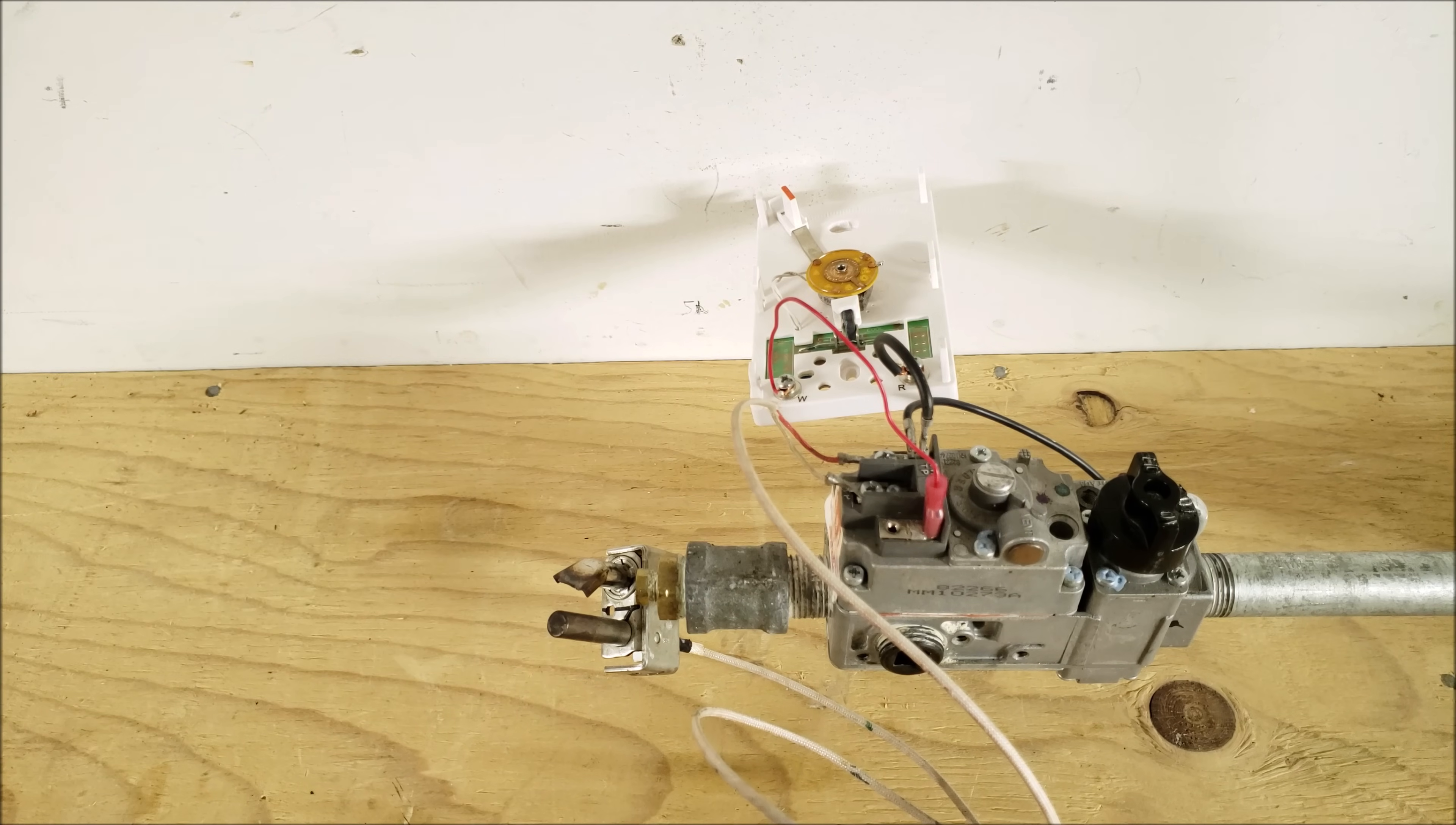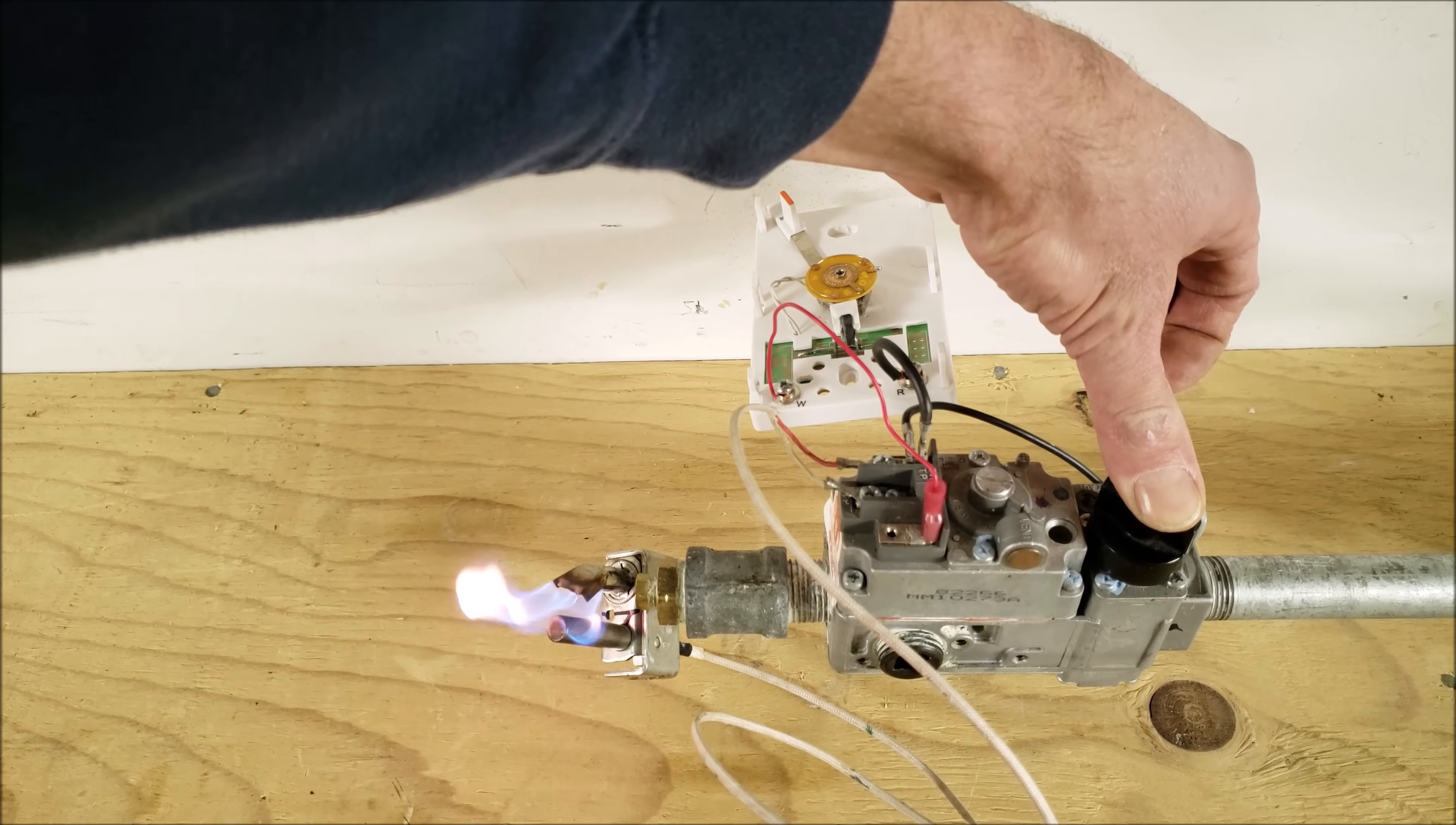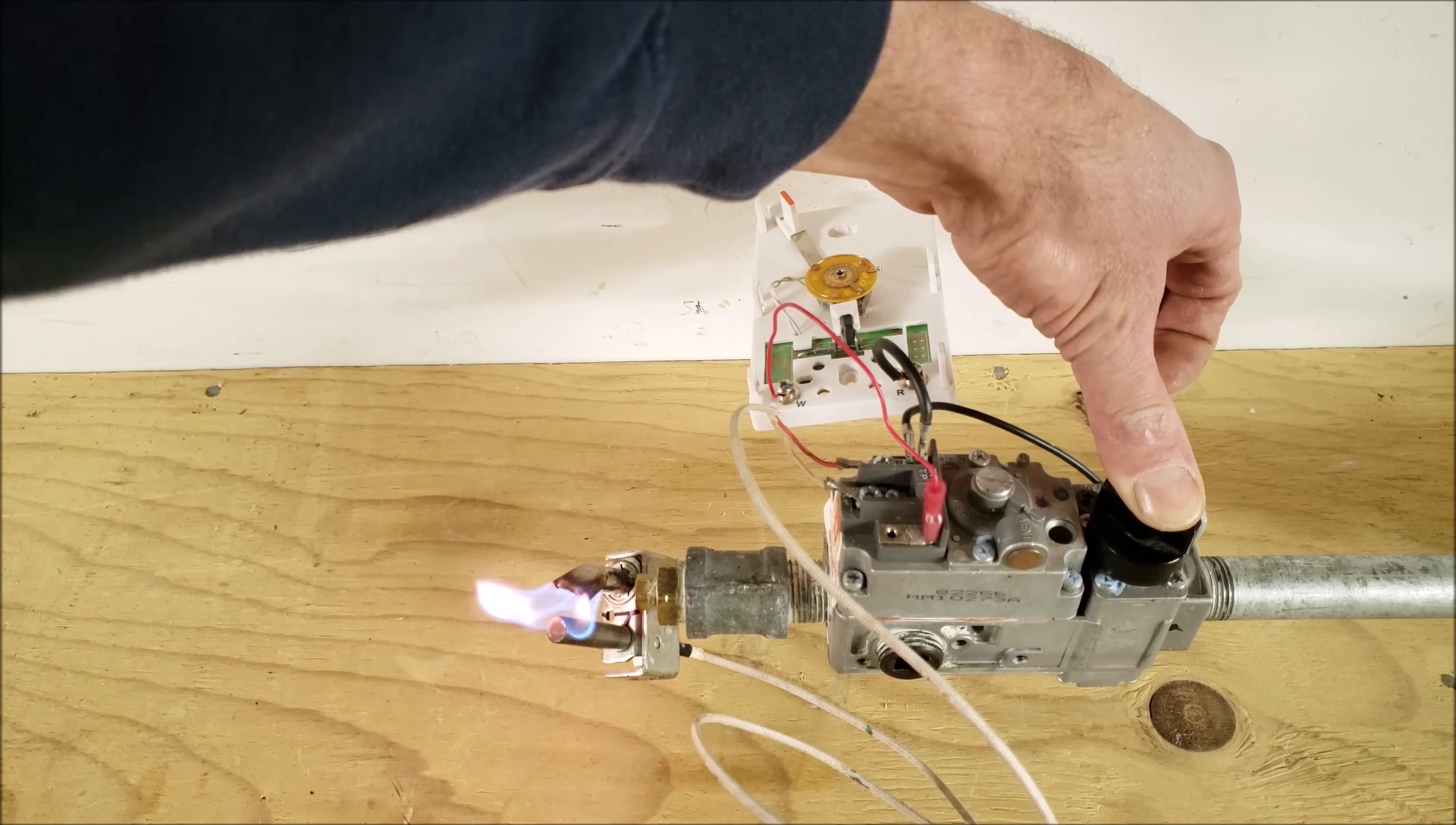So in order to turn your pilot on we're going to turn this button over to the pilot and have that lined up right there and then we're going to press down on that. Typically you're going to hold that button down for about 45 seconds but it may not take that long in order for the thermopile to heat up and generate enough millivolts to keep the solenoid held in place.